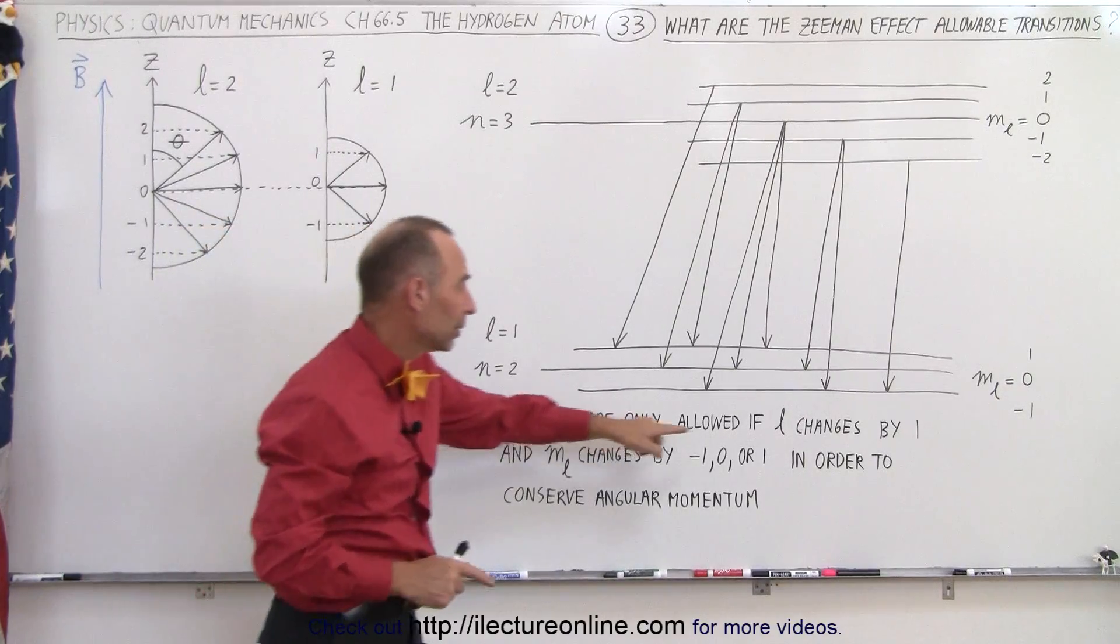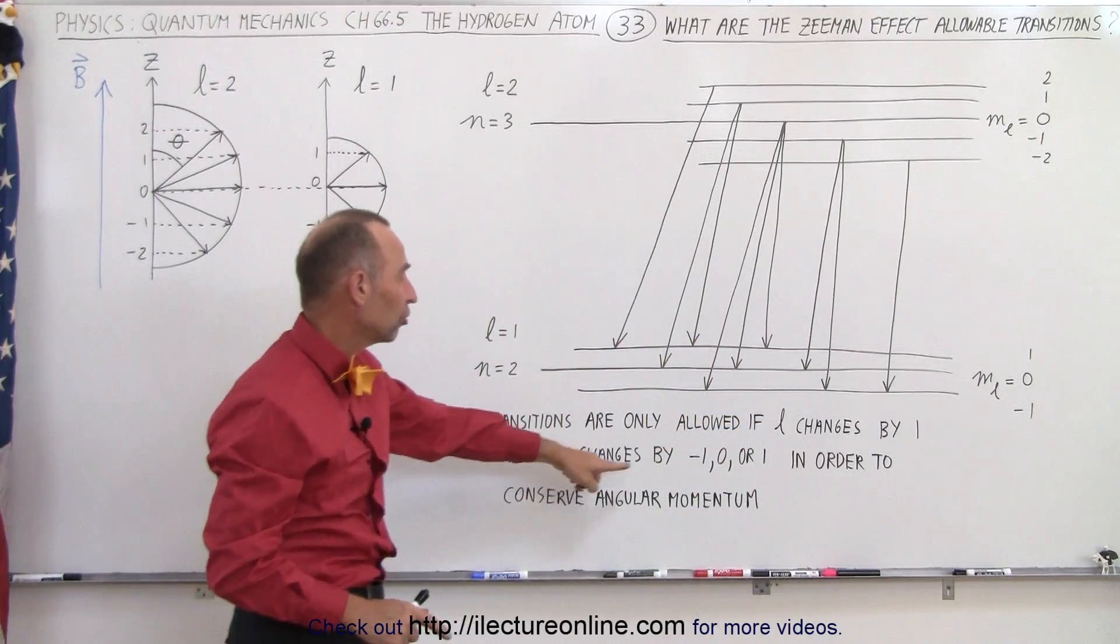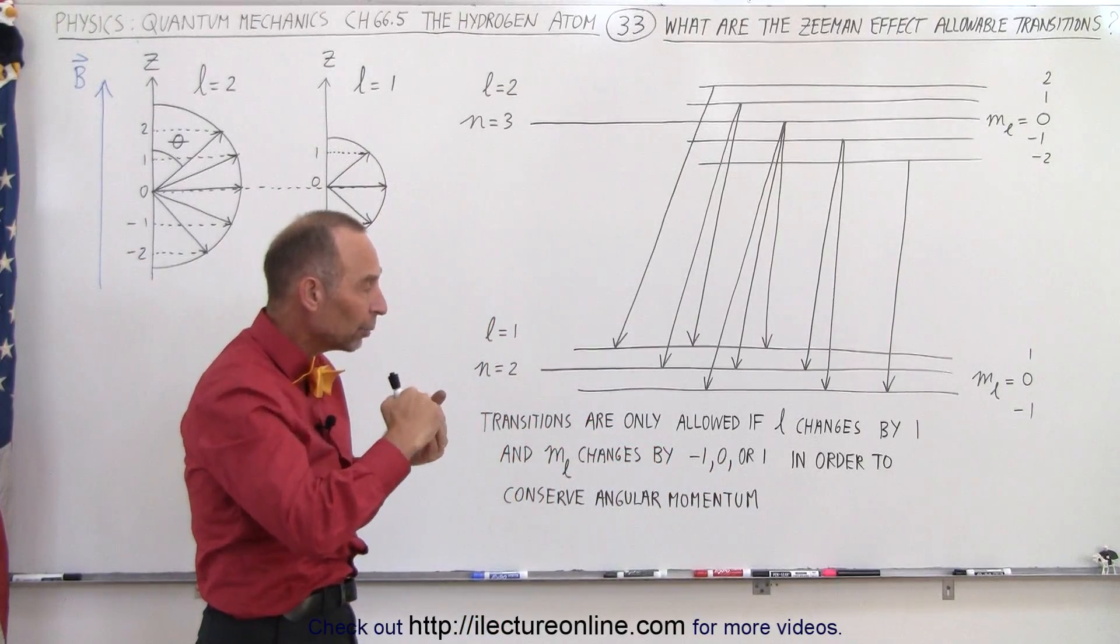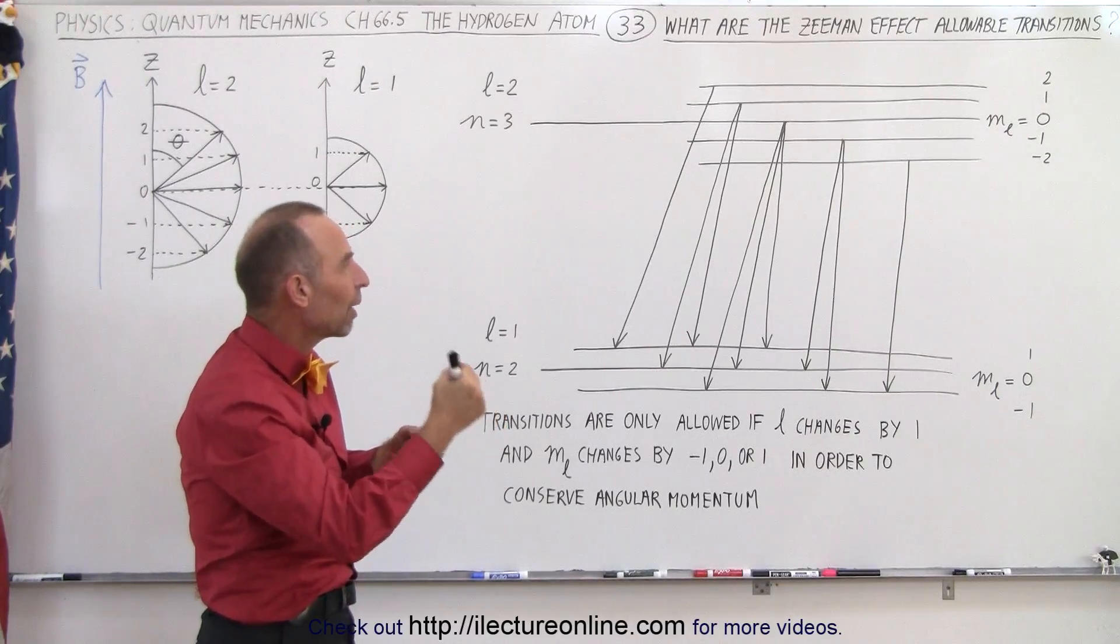The transitions are only allowed if l changes by 1, and m sub l changes by negative 1, 0, or 1. In other words, m sub l can go up 1, down 1, or stay at the same value when l changes by 1 value.